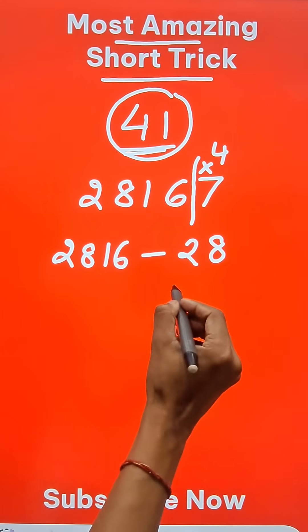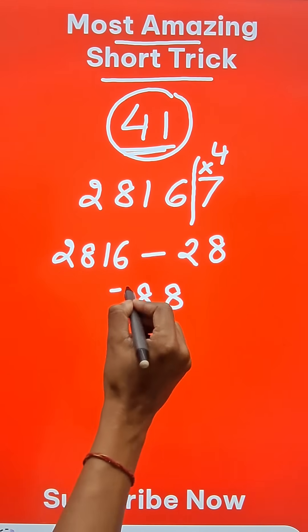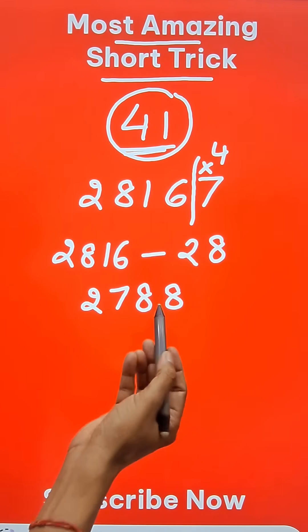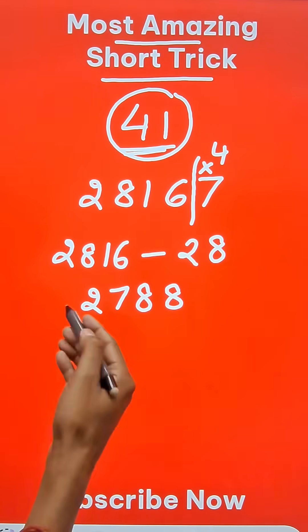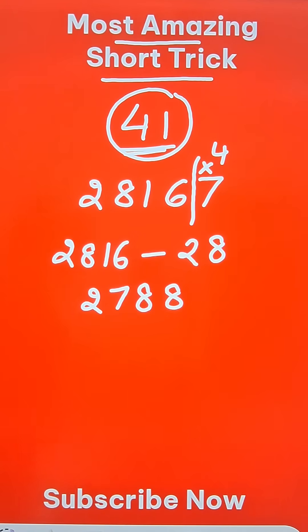So this gives me 2788. Now still I can't check whether 2788 is divisible by 41 or not, so I will apply the rule again.